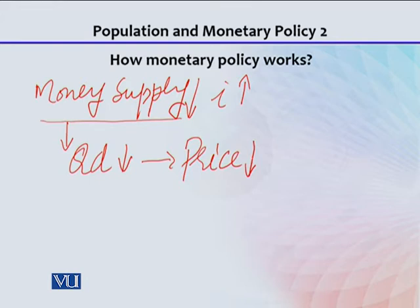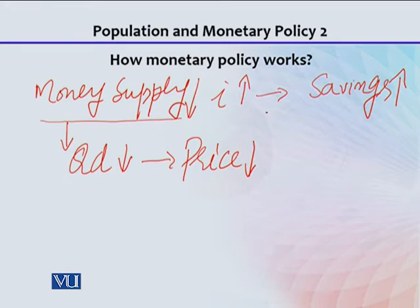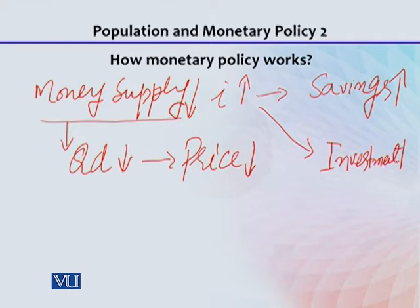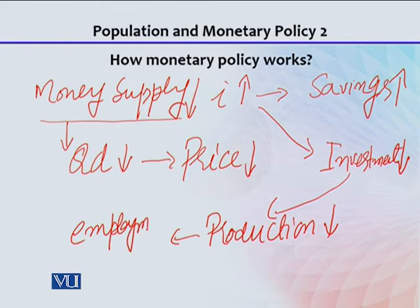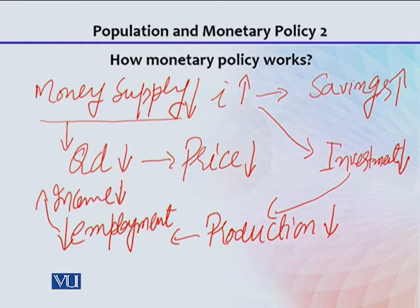It is not necessarily guaranteed that prices will fall because of this. But when you increase the rate of interest, people move towards saving, so savings increase. However, while savings increase, investment decreases. With less investment, production falls, and with lower production, employment also goes down. When employment decreases, people's purchasing power or income decreases, and with lower income, demand also falls. This is a full mechanism, and controlling where it stops is sometimes beyond the government's control.